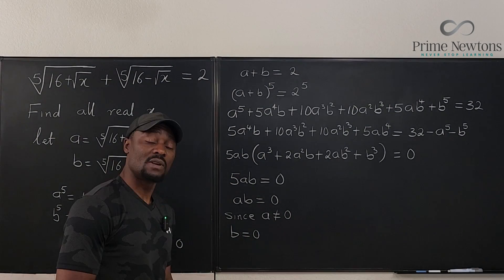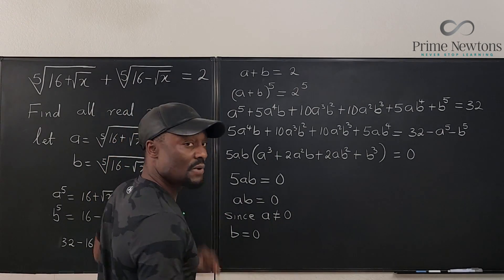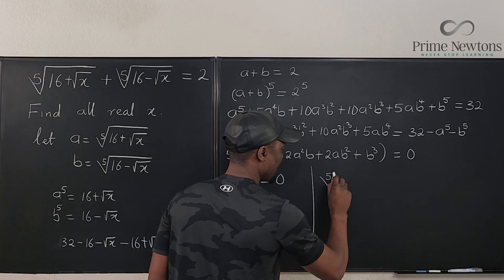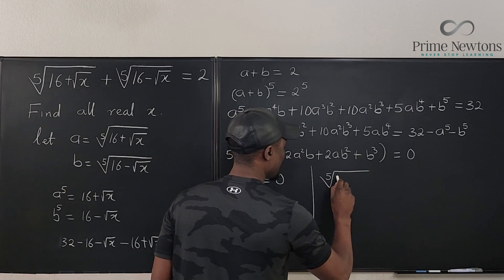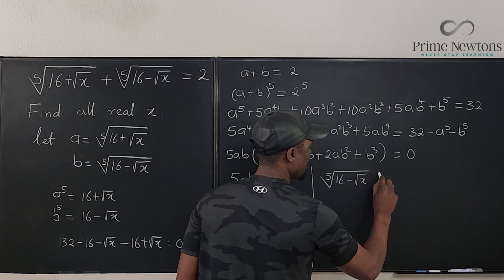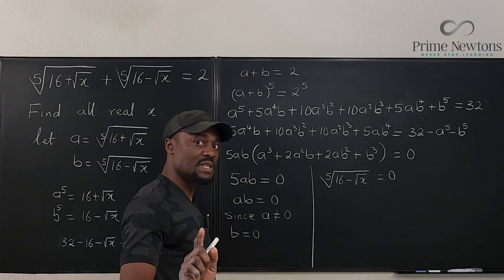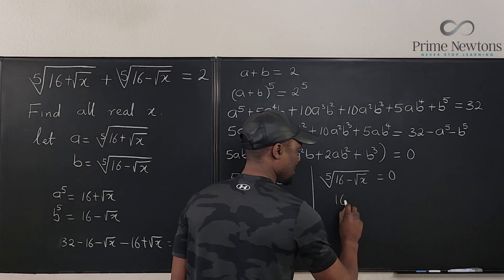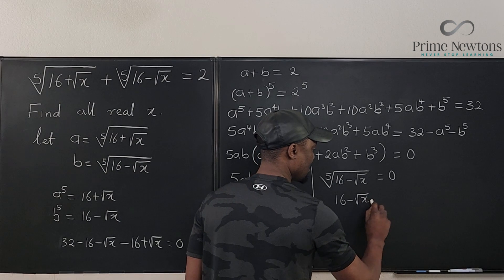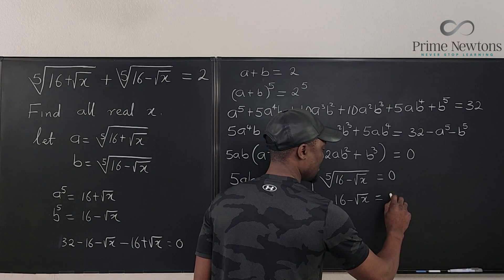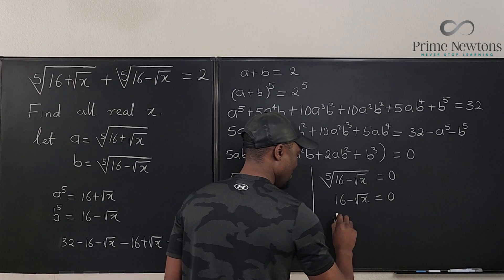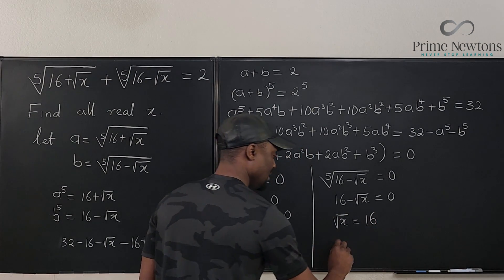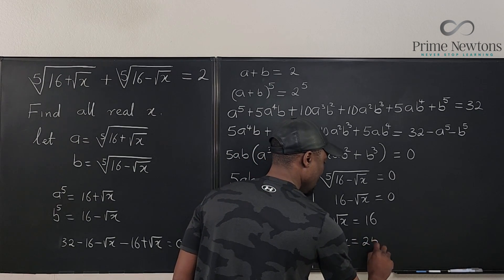Since a is not zero, b must be zero. So we set b = 0, meaning the fifth root of (16 − √x) = 0. Raising both sides to the fifth power: 16 − √x = 0, so √x = 16. Squaring both sides gives x = 256.